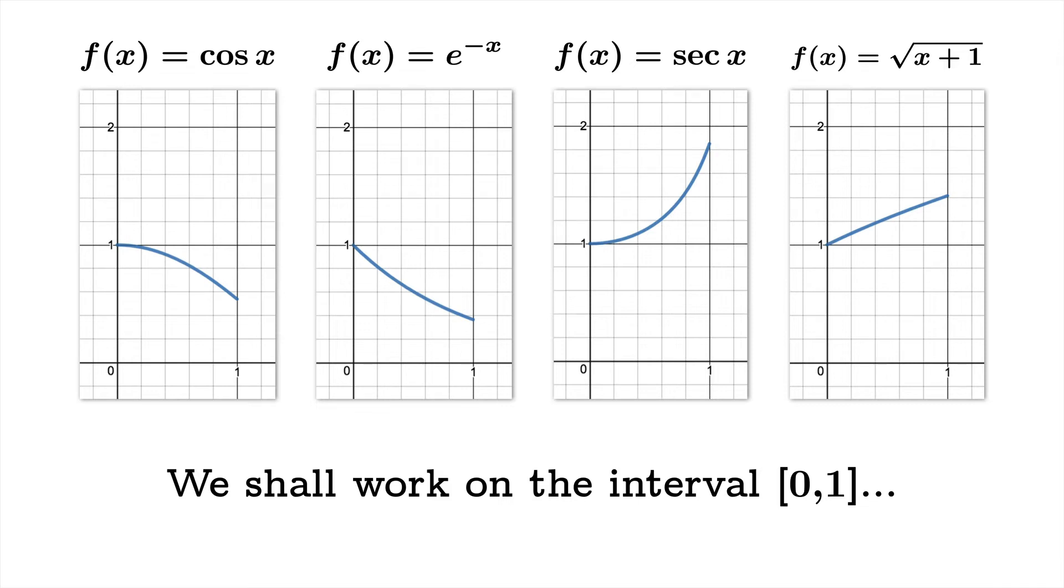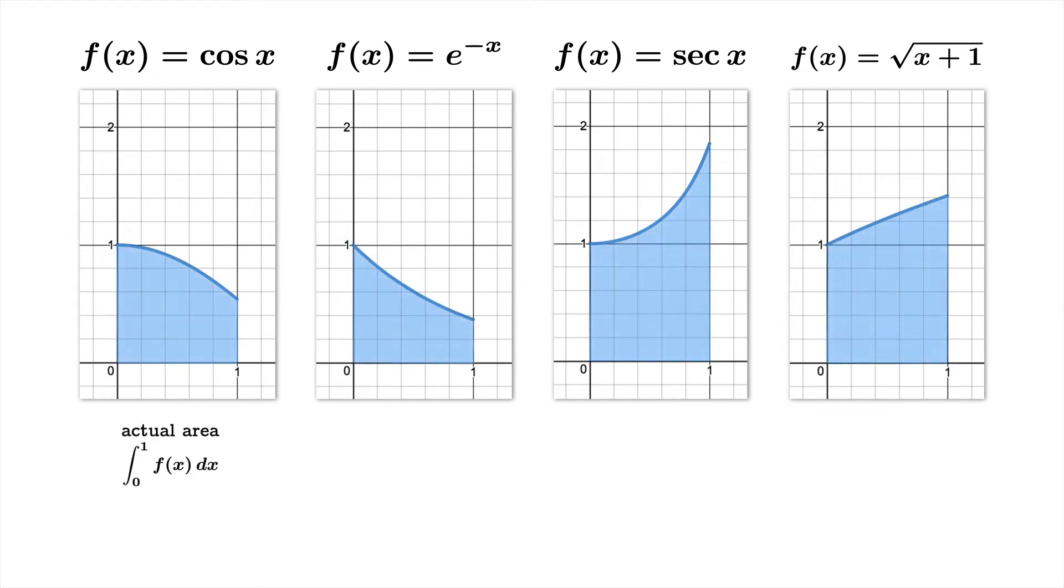We're going to calculate a bunch of quantities for each of these examples. We'll calculate the actual area. We'll calculate the trapezoid sum, which takes a particularly nice form in this case - you're just going to average the function heights at either endpoint and the interval width being 1. We will calculate the midpoint sum, which again because the interval width is 1 just amounts to evaluating f of one-half.